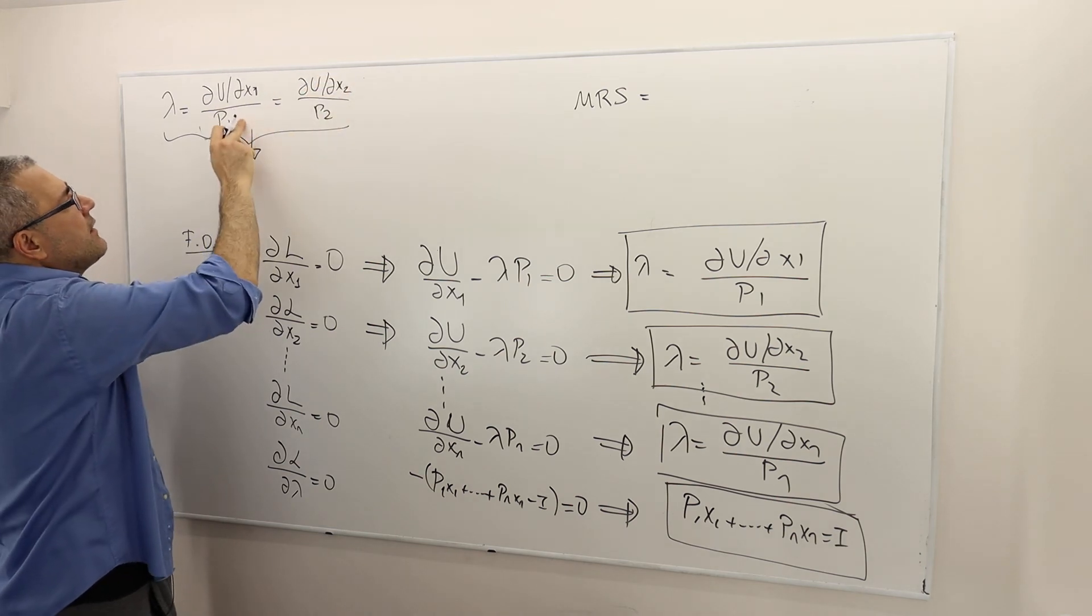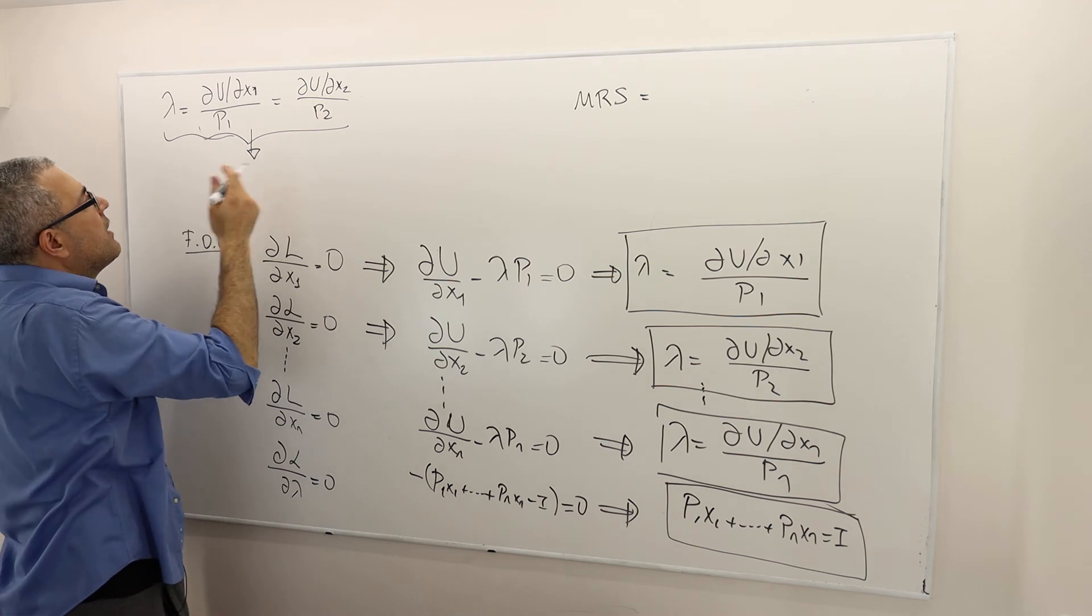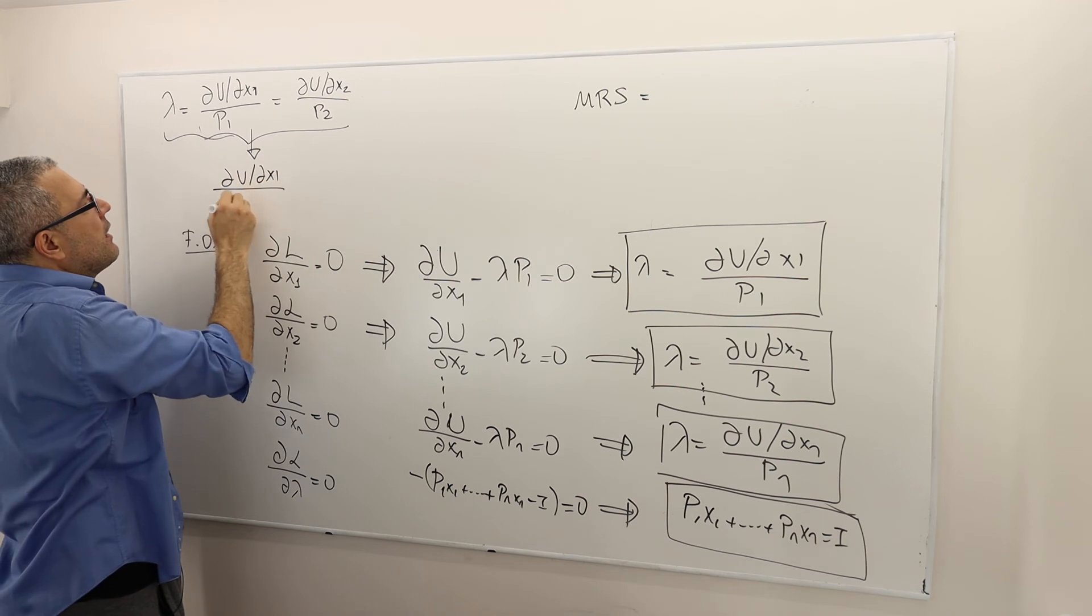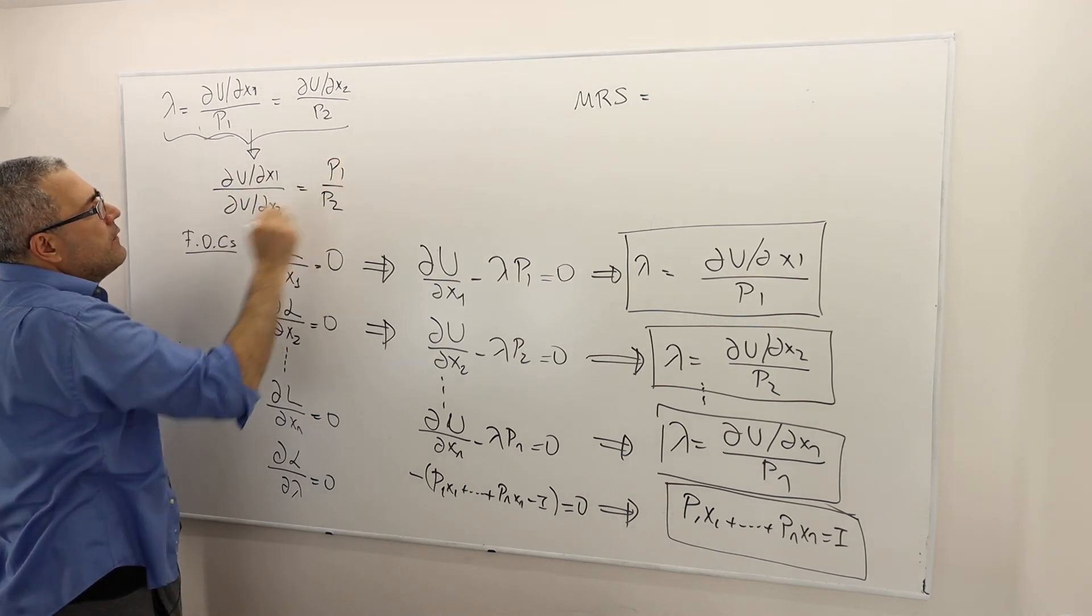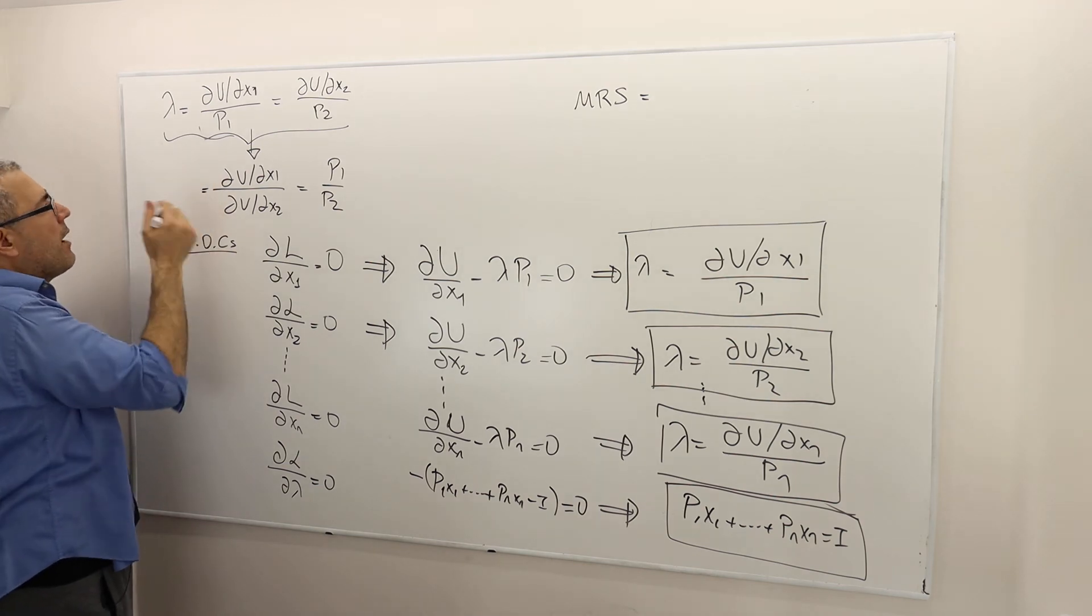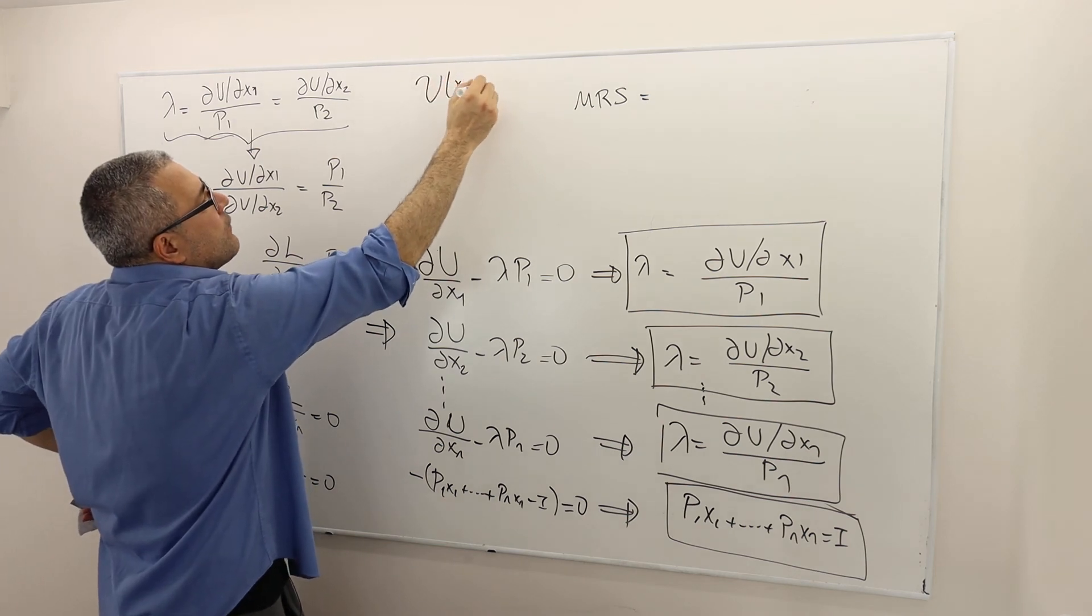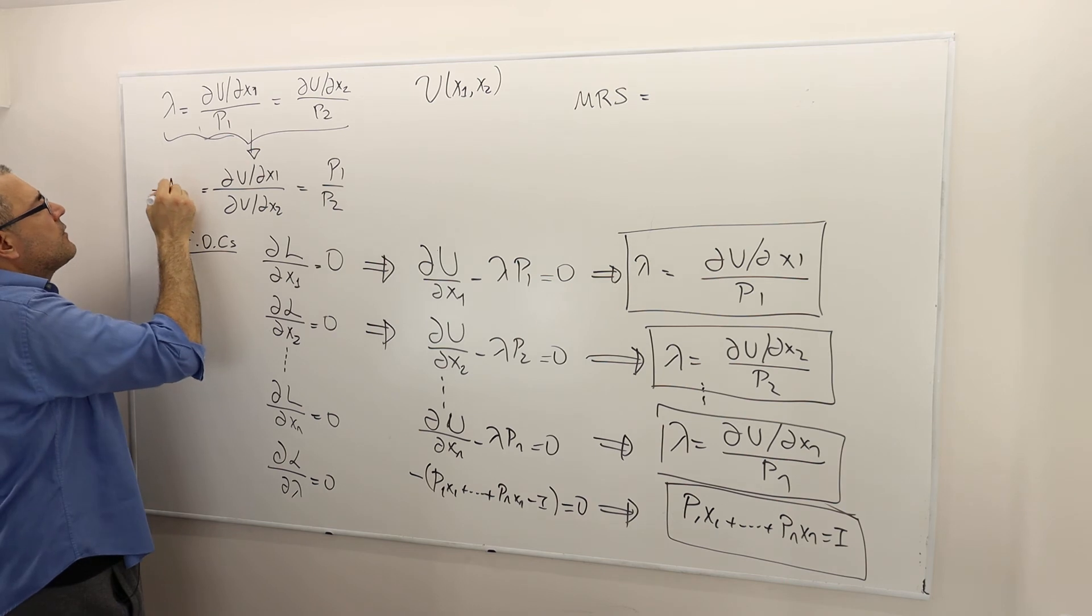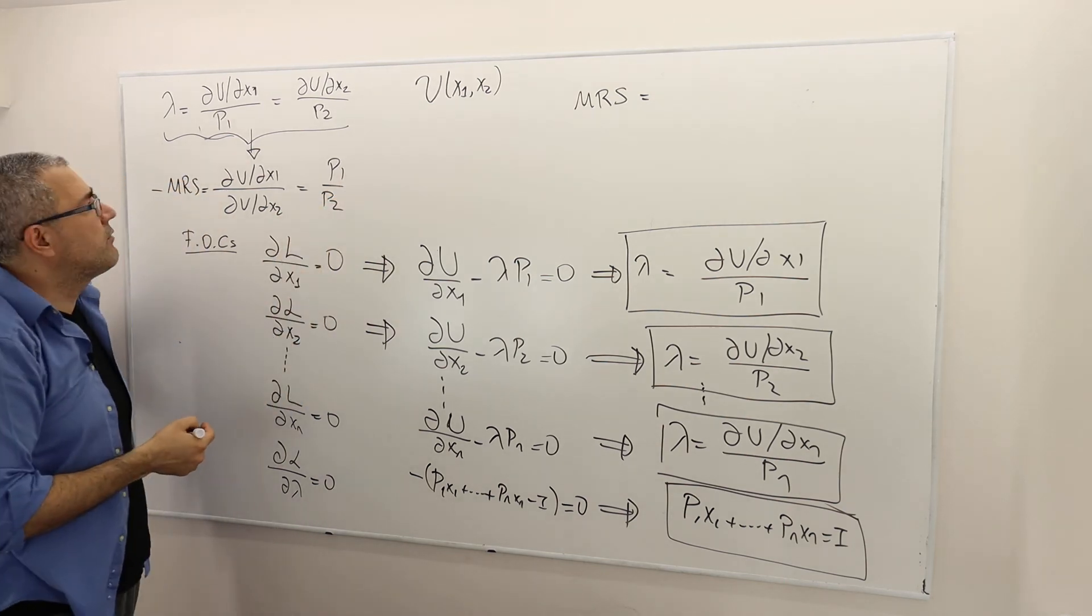send this here and send p1 here, assuming that none of those are zero. So I have del u del x1 divided by del u del x2 equals p1 over p2, right? So what was that? Well, that was, if you remember, the utility function is a function of two goods. If this is the case, well, this is nothing but minus marginal rate of substitution. And this is the price ratio.